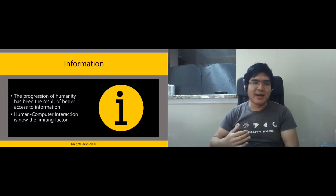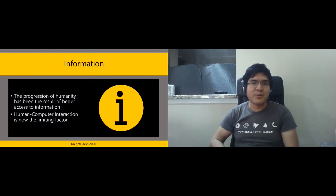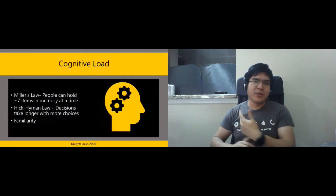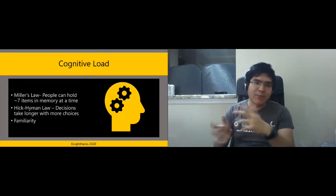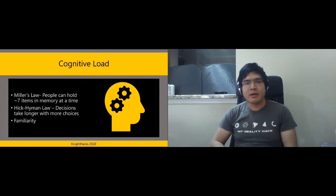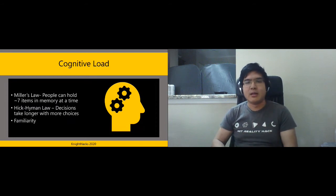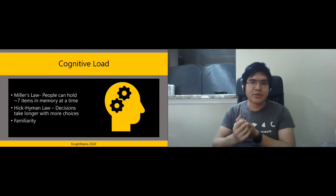I've talked about the importance of HCI and why it's going to be the field that helps with the progression of humanity — it's the limiting factor, because now it's just how much information we can give to people. I'll now talk about a few design aspects of interaction design. There's a concept called cognitive load, related to Miller's law, where people can hold roughly about seven items in their memory at any given time — plus or minus two, so preferably keep it to five, maximum of nine.